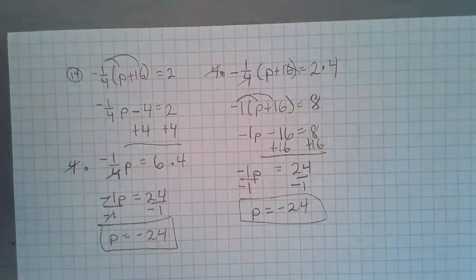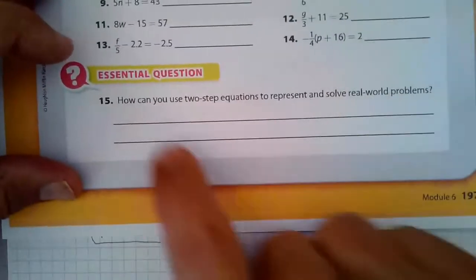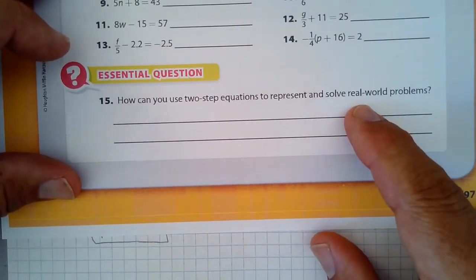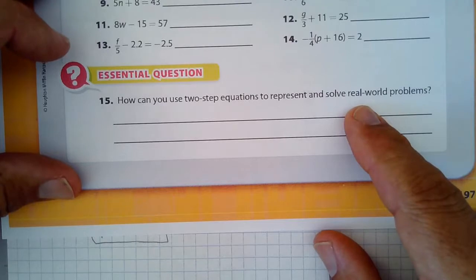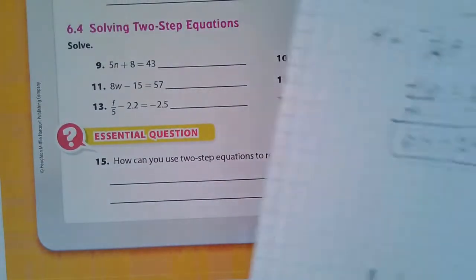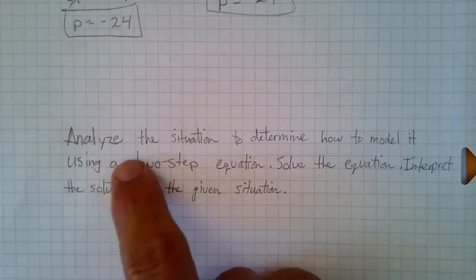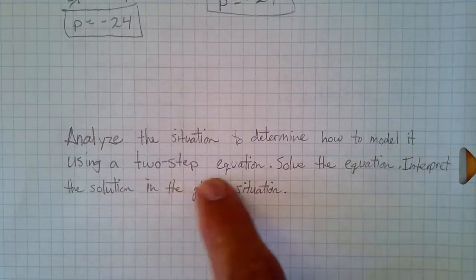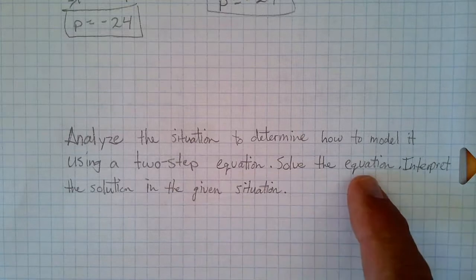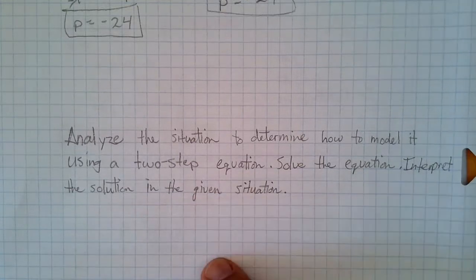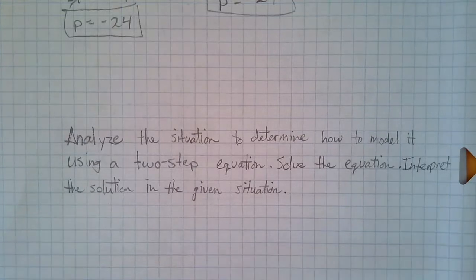And our last one. Number 15. How can you use two-step equations to represent and solve real-world problems? And my response to this is, well, this is what you could do. You could analyze the situation to determine how to model it using a two-step equation. You would then solve the equation. And then, you would interpret the solution in the given situation. And that's what you've got to know.